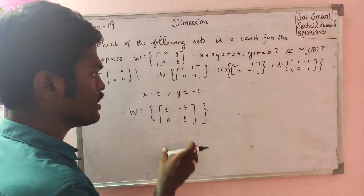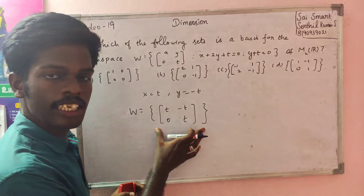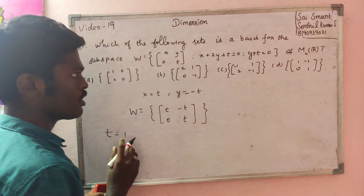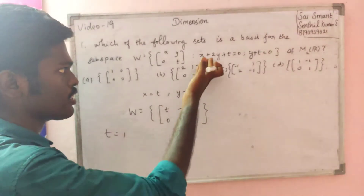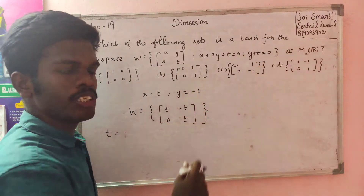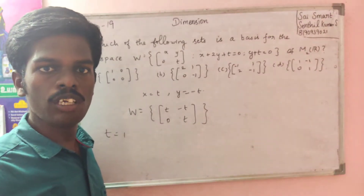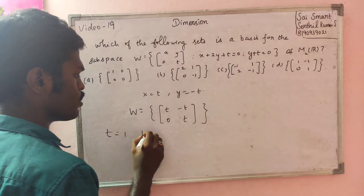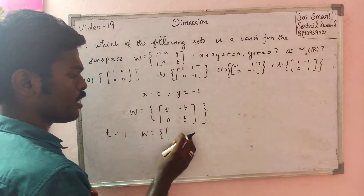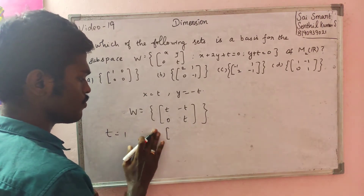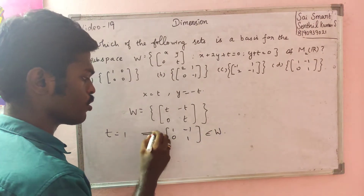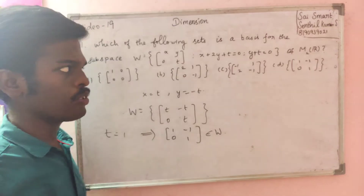This is the set. For the set of dimensions, we can select the element option. For example, t is equal to 1. So t belongs to the real numbers. So W is equal to the subspace of a vector space. All the elements are equal to the real numbers. So t is equal to 1, and one element is equal to the same form.